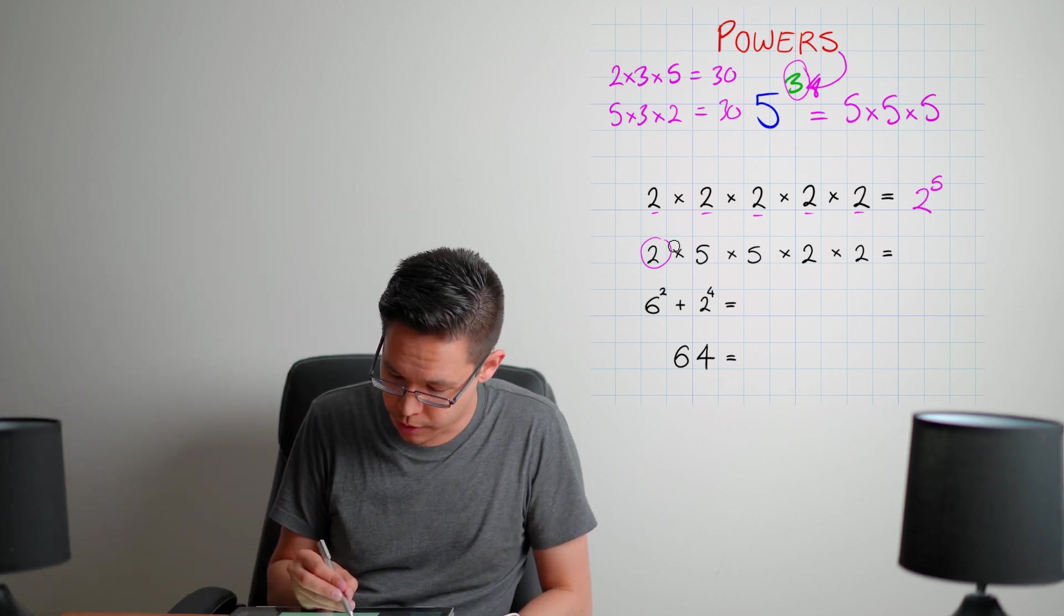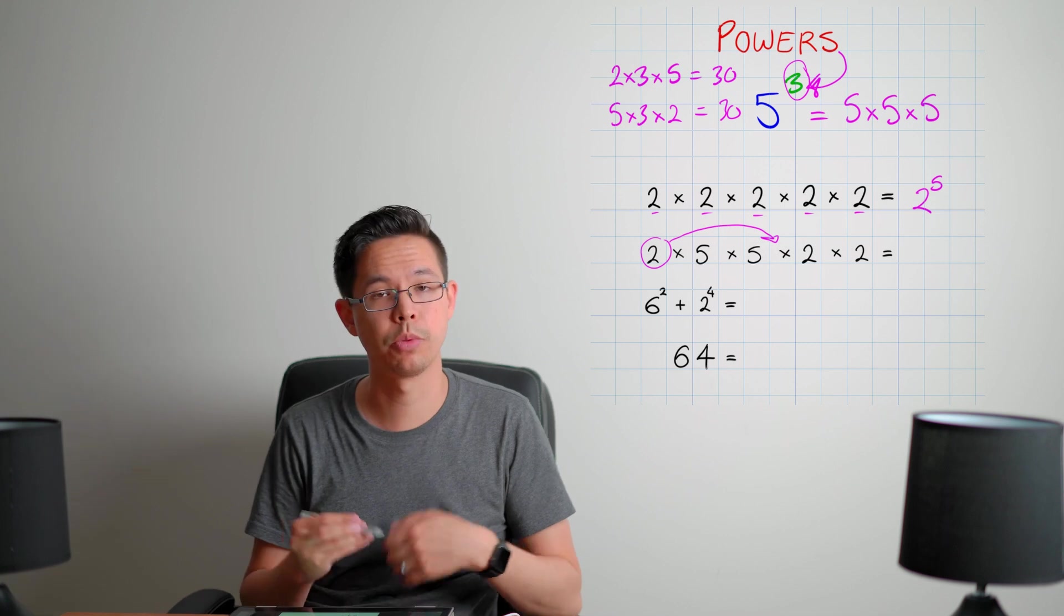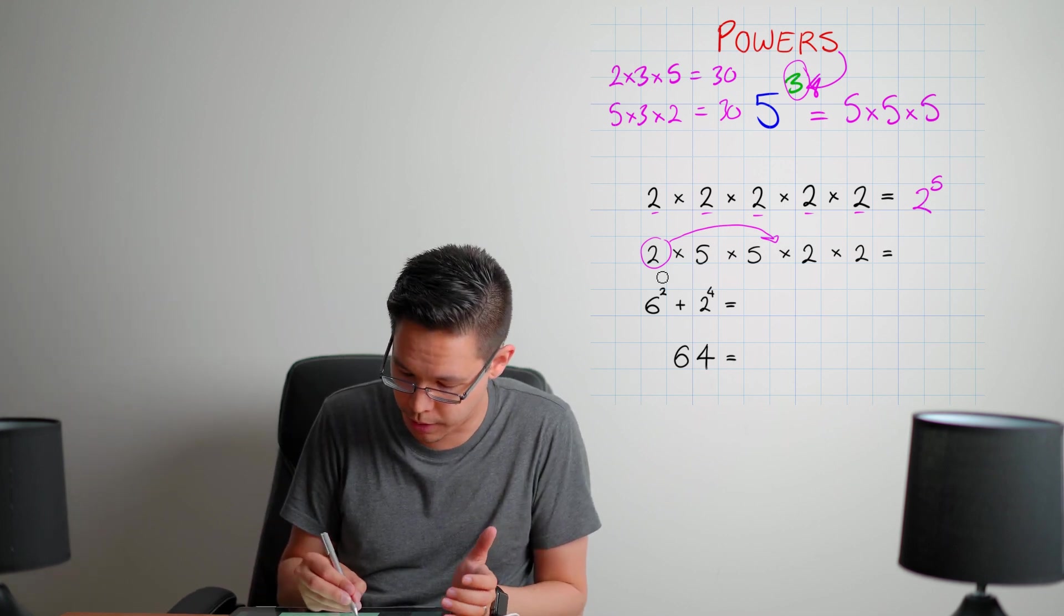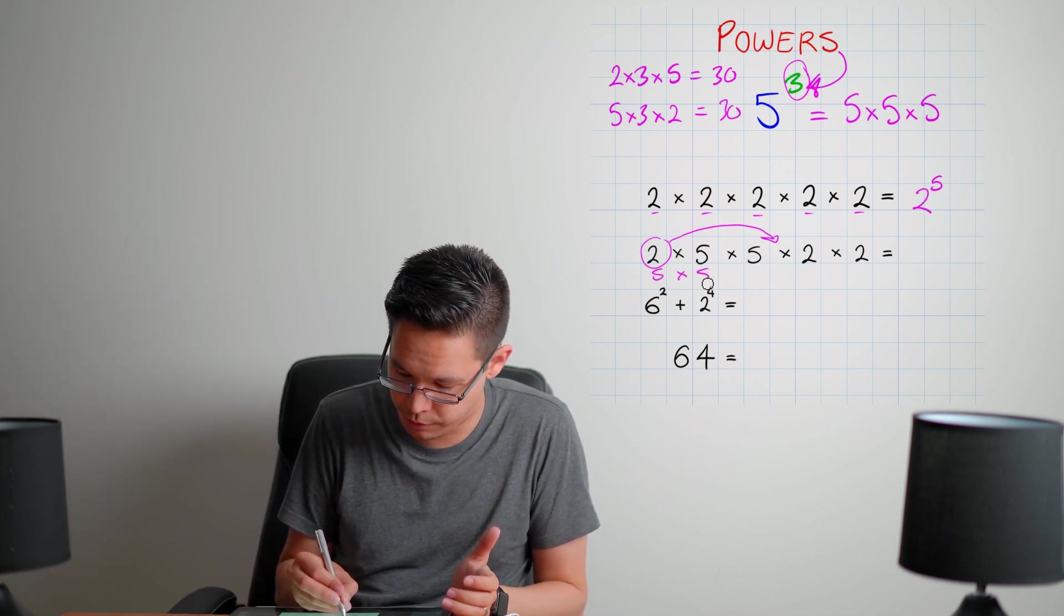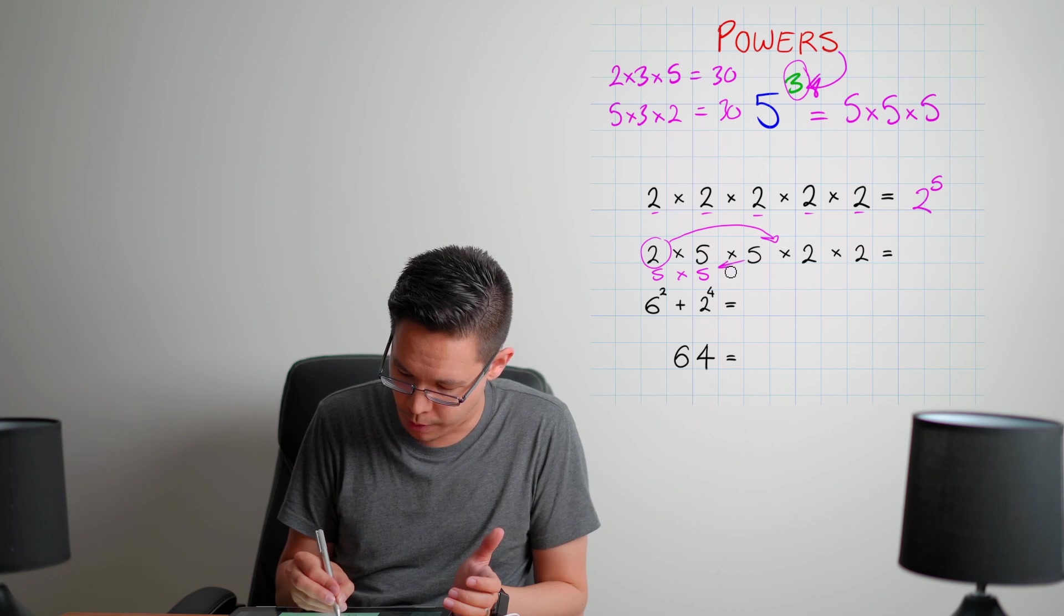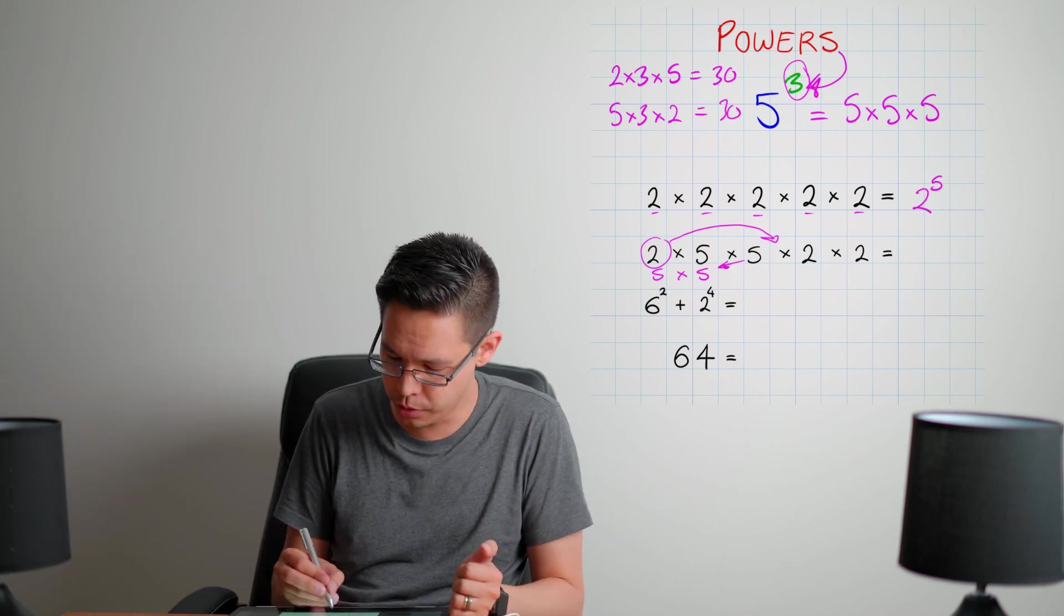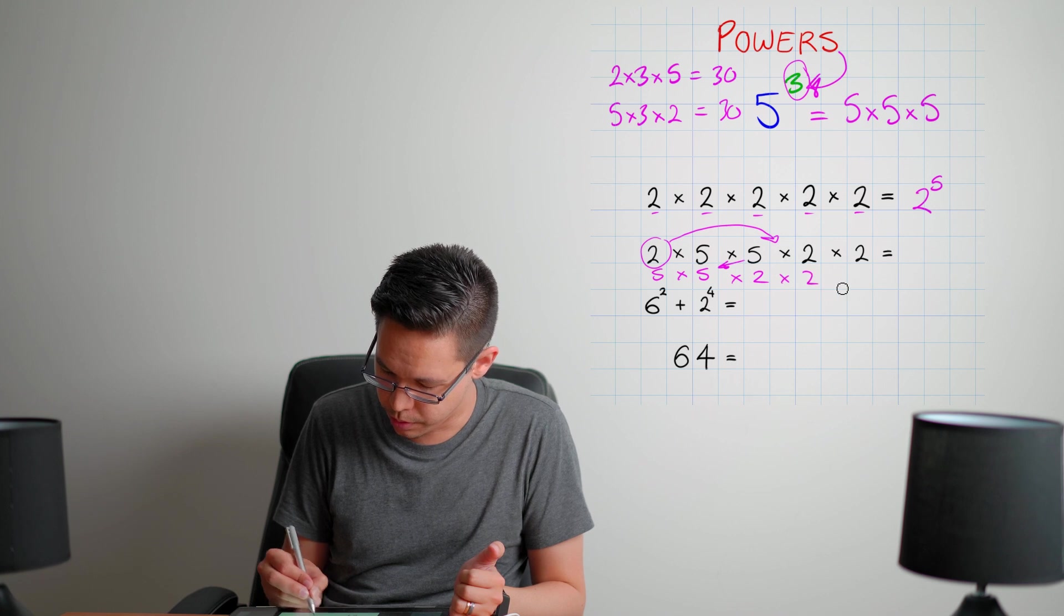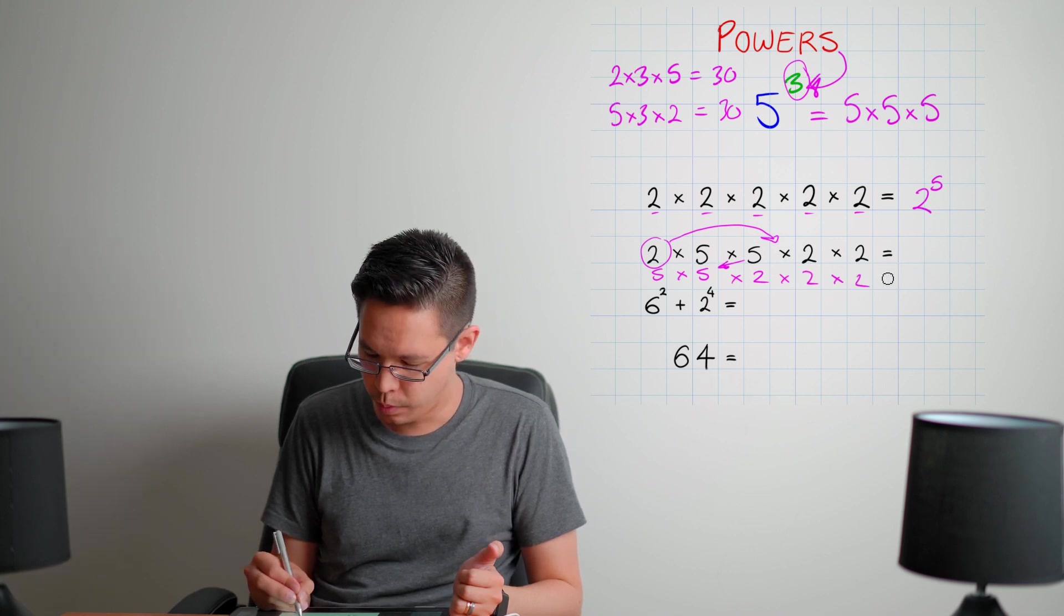So here I would actually prefer this two to be down the line next to its brethren. So this sequence here could actually be - I'll just shuffle it along. So five times five, I just move them that way. And then the twos are all together. So times two, times two, times two.